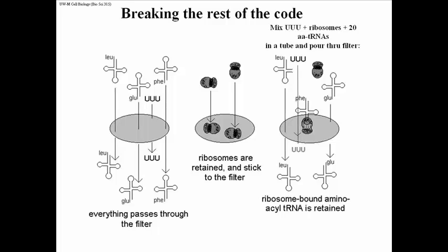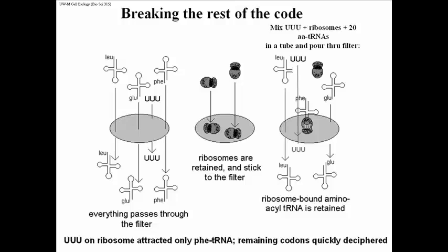Mix them in a tube, then pour the mixture through the filter after a moment or two. The expectation was that the ribosome would bind to UUU, and if it did, the phenylalanine tRNA shown here would be induced to bind to the ribosome via the UUU codon. If it did, the phenylalanine tRNA bound to the ribosome could not pass through the filter, and the filters could be analyzed for such a complex. And indeed, that was what was found — UUU on the ribosome attracted only phenylalanine tRNA from the mixture. The remaining codons were quickly deciphered in the same way.